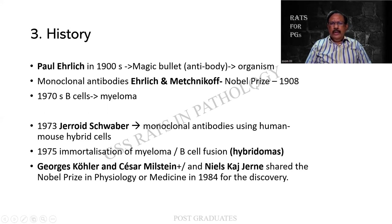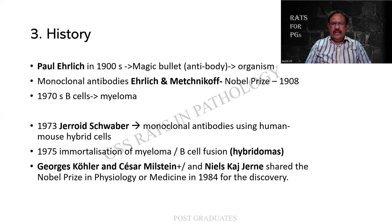These people were given the Nobel Prize in 1908. Also, we found that the B-cells gave development to the plasma cells or the myeloma cells. The human-mouse hybrid cells were found out by Geroid Schwaber in 1973. And in 1975, the concept of immortalization of the myeloma B-cell fusion, later on called the hybridomas, was introduced. A good number of authors have been awarded the Nobel Prize for discoveries in this field. Please do understand that there is a lot of continuous contribution happening even now.